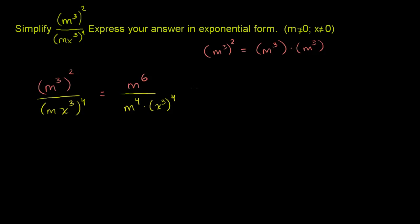Now what does this simplify to? Well, our numerator is still m to the sixth. I'll do one step at a time. Our numerator is still m to the sixth. Our denominator is m to the fourth. We have this x to the third and then that to the fourth power. So we can multiply these. 3 times 4. So this is x to the twelfth power.